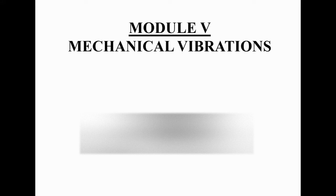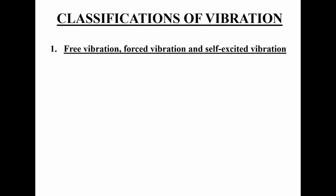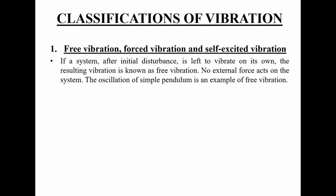Hello students, today we are going to deal with different classifications of mechanical vibration. The first one is free vibration, forced vibration, and self-excited vibration. In free vibration, if a system after an initial disturbance is left to vibrate on its own, the resulting vibration is known as free vibration. No external force acts on the system. The oscillation of a simple pendulum is an example of free vibration.